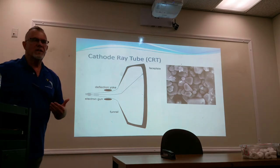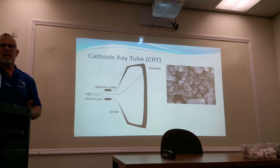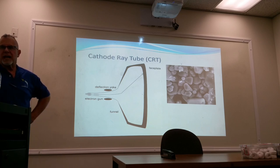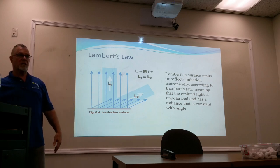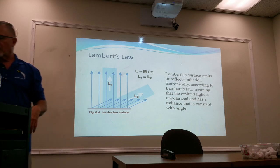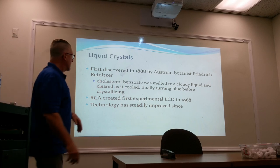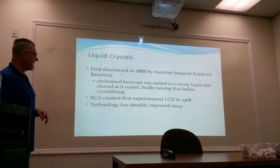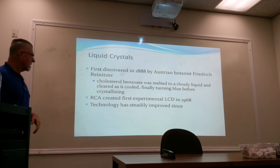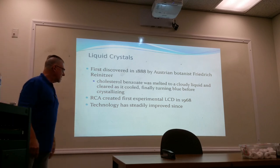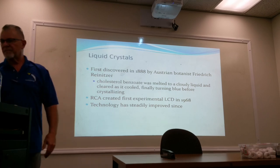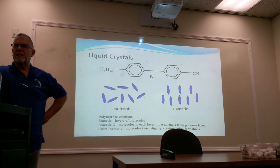We don't use CRTs anymore, though they still make the best television sets because of Lambert's law — you can look at a cathode ray tube from any angle from zero through 180 degrees and they're just as bright. LCDs don't quite work like that. LCDs have been around a long time — invented since 1888 by a botanist who noticed cholesterol benzoate crystallized when it cooled. RCA did the first experimental LCD in 1968, and they've totally improved since then.